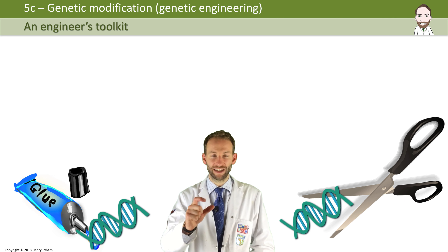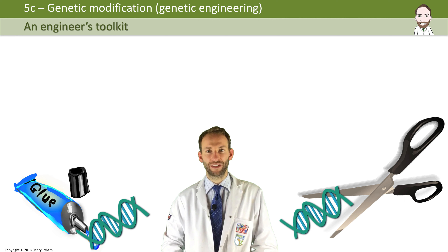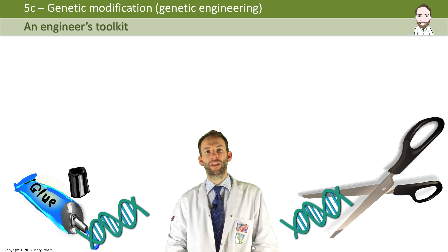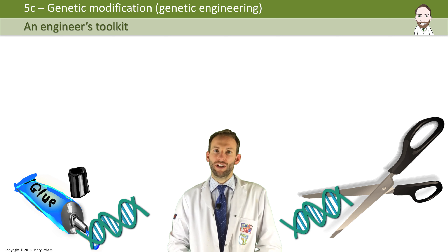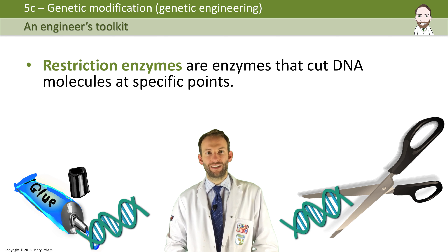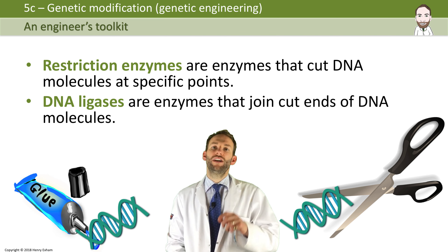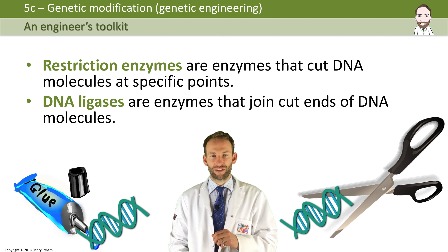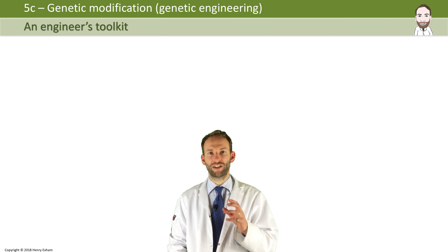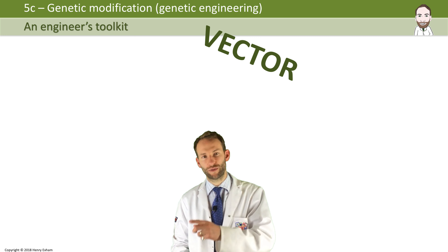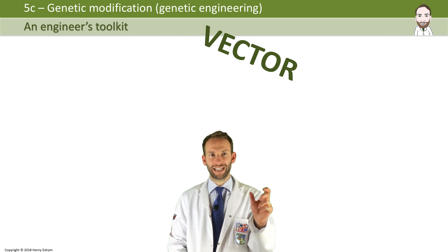What do you need in order to do this? You need a kind of genetic engineer's toolkit. You need some DNA scissors for snipping DNA apart and cutting genes out. And you need some glue so that you can glue the gene into the DNA of the cell that you want. DNA scissors are known as restriction enzymes — they cut DNA at specific points. And DNA glue is actually called DNA ligases, which join cut ends of DNA molecules together.